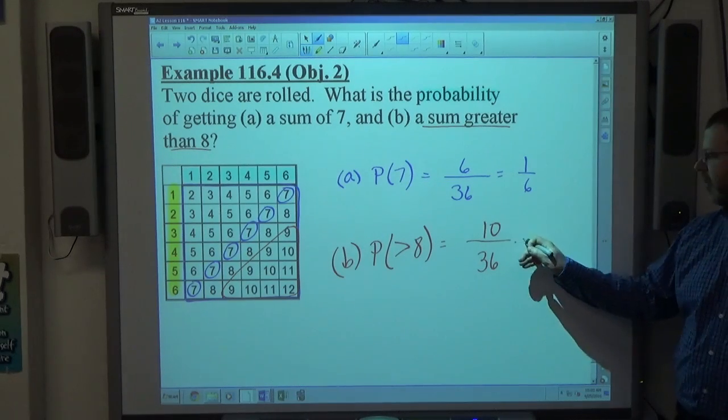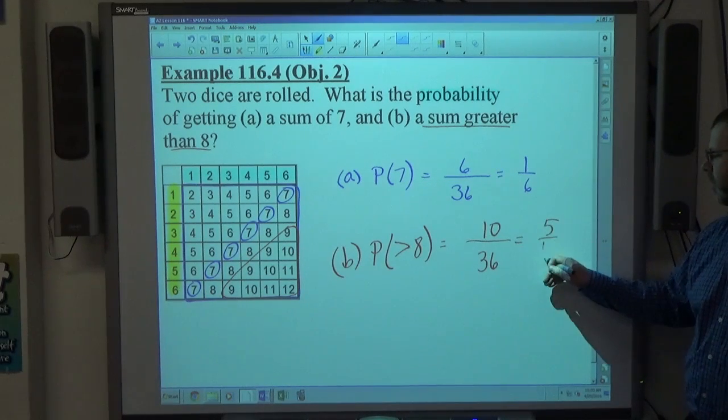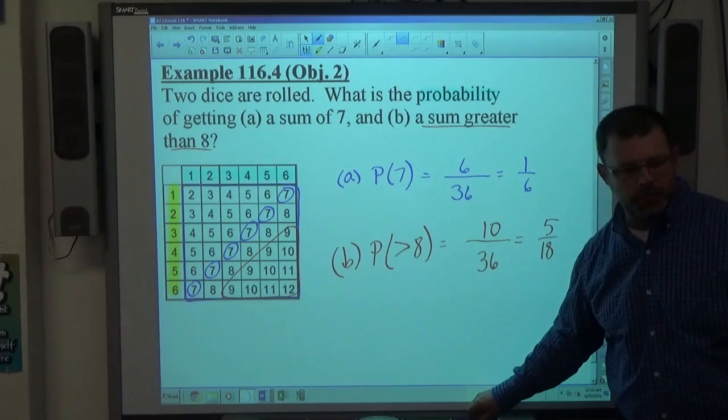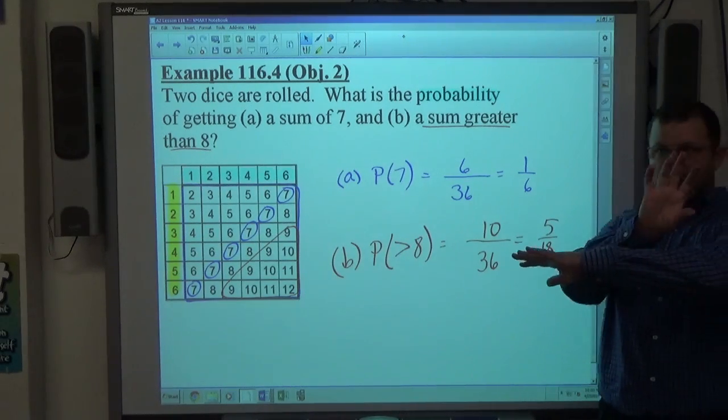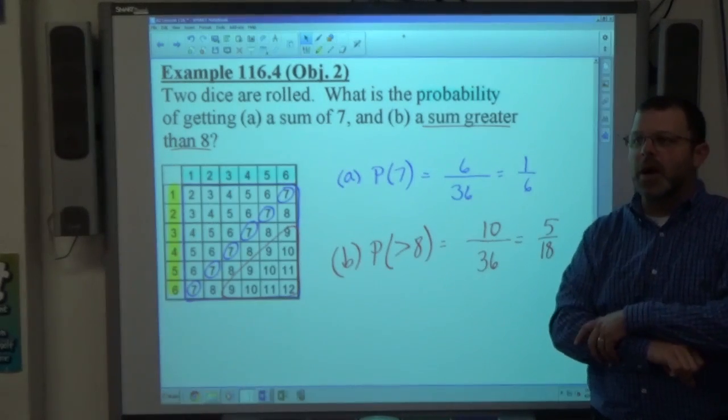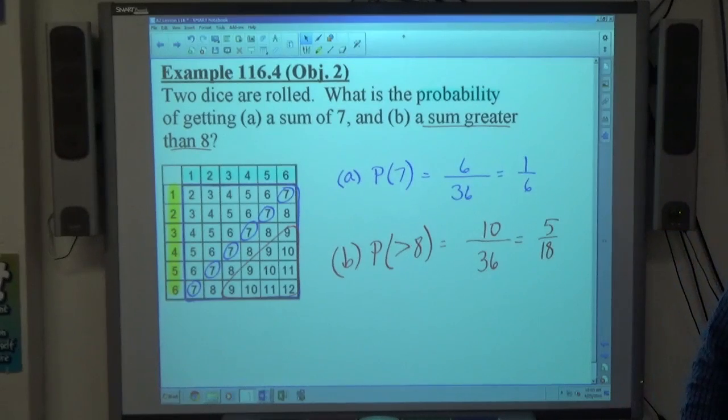And if we reduce 10/36 by 2, we get 5/18. Always reduce to lowest terms. But that's how you do those problems. Number of successful things, number of things that fit this description on top. How many ways of doing anything on the bottom. Reduce the fraction. That's the probability.